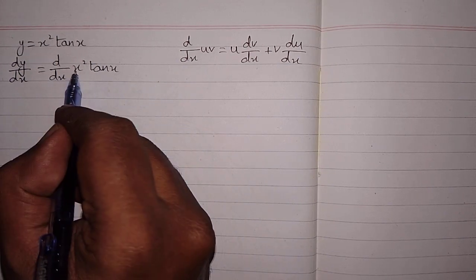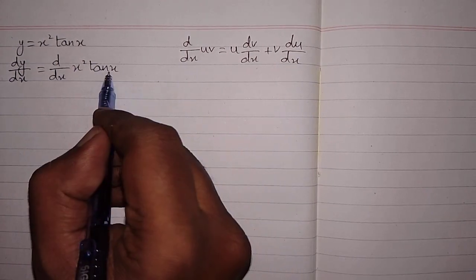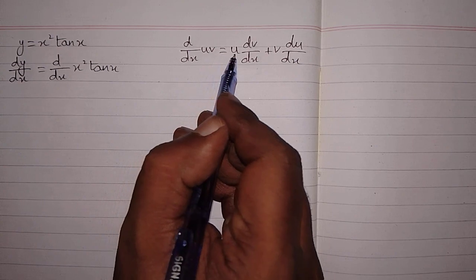Now we can see that we have x squared in place of u and tan x in place of v.